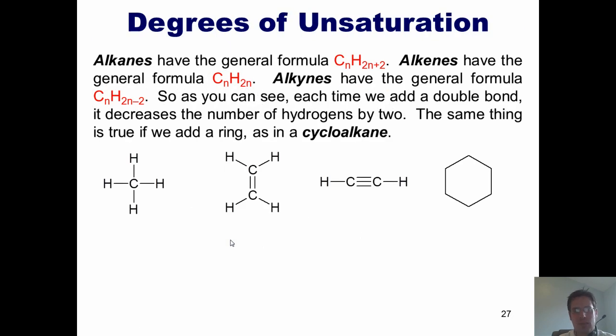And now to our last topic, degrees of unsaturation. I see standardized questions that ask about this topic all the time. To understand this, you have to remember that alkanes have the general formula CnH2n plus 2, where n is any integer you want. Alkenes have the general formula of CnH2n. Alkynes, which are compounds that have carbon-carbon triple bonds, have the general formula CnH2n minus 2. Do you see a pattern? Well, as you can see, each time we add a double bond, it decreases the number of hydrogens by 2. Now, the same thing is true if we add a ring, as in a cycloalkane.